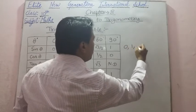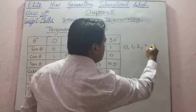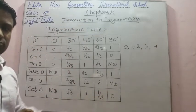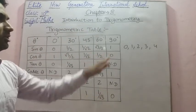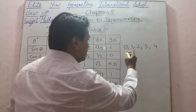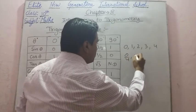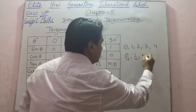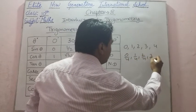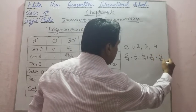So we write 0, 1, 2, 3, and 4. Now after this, we will divide all these numbers by 4. So dividing: 0 upon 4, 1 upon 4, 2 upon 4, 3 upon 4, and 4 upon 4.